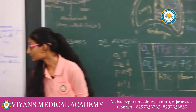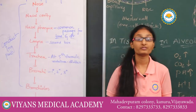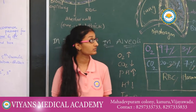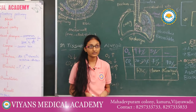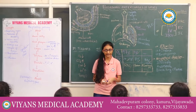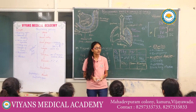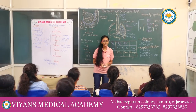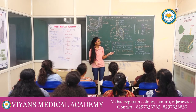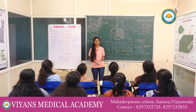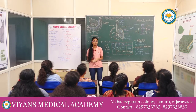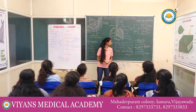Human beings have the capacity to regulate their respiratory organs. The respiratory rhythm center is present in the medullary region of the brain. The pneumotaxic center is present in the Pons region of the brain. The chemosensitive area, also present in the medullary region, can alter the respiratory volume.